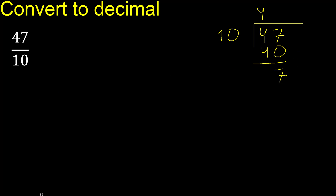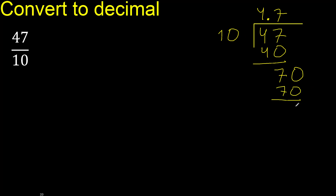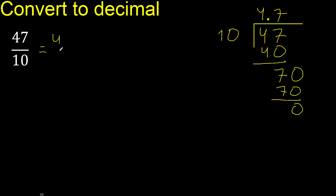There is no number that goes down, therefore complete — always complete with 0 here. Point. 10 multiplied by which number? Multiplied by 7 is 70. Subtract 0. Therefore finish.